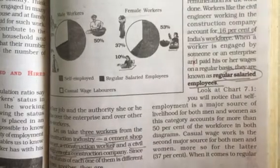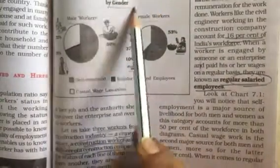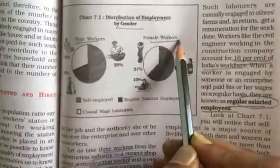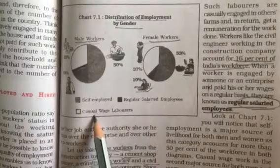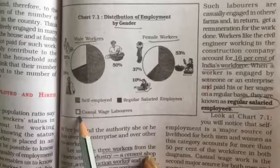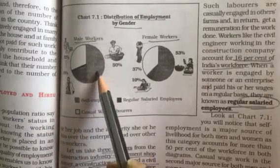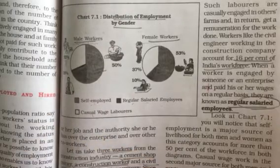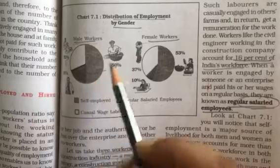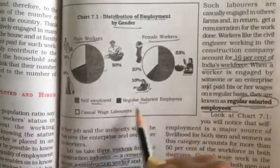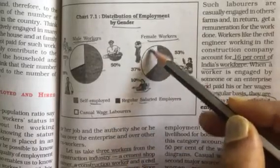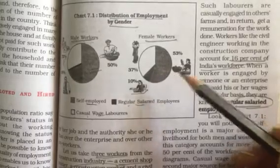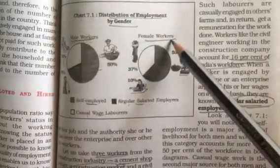In your book there is a chart showing the distribution of employment by gender basis — male workers and female workers — categorized into three types: self-employed, regular salaried, and casual wage. Among male workers, 32% are casual wage laborers, 50% are self-employed, and 18% are regular salaried. Moving on to female workers, 37% are casual wage laborers, 53% are self-employed, and 10% are regularly salaried. This is the difference between the male and female worker distribution.